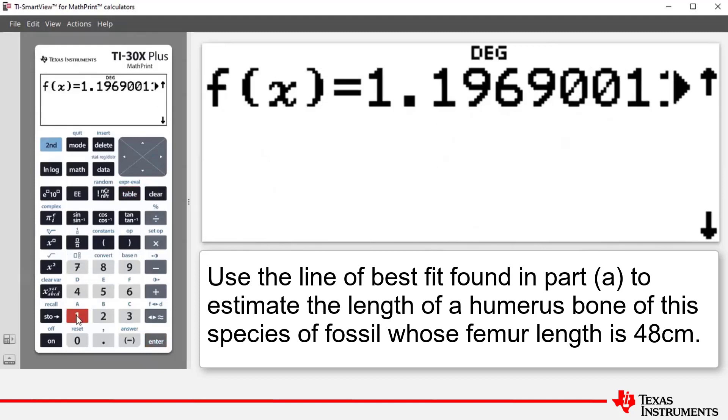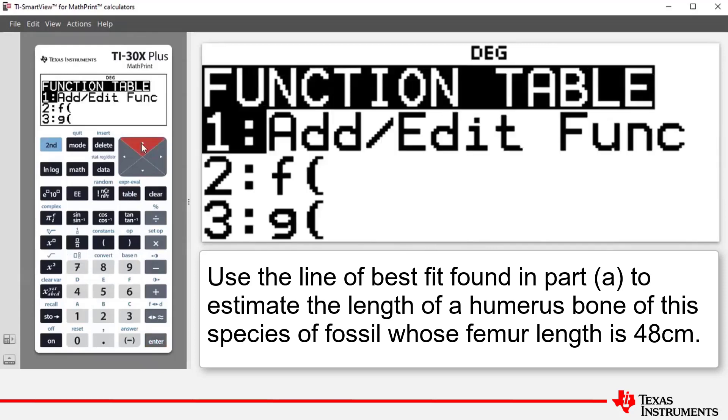we can see there that that is the location where our line of best fit has been stored. You can see most of the value of A there. Now, if I press arrow up, we have a command here which is denoted by F open bracket. And we're going to use that command.